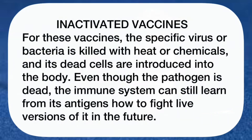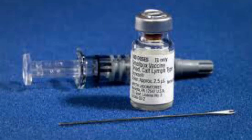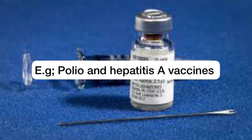Secondly, we have the inactivated vaccines, in which the specific virus or bacteria is killed with heat or chemicals, and its dead cells are introduced into the body. Even though the pathogen is dead, the immune system can still learn from its antigens how to fight live versions of it in the future. Examples of inactivated vaccines are the polio and hepatitis A vaccines.